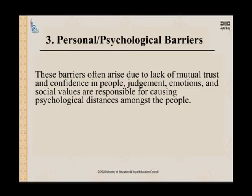The next barrier is the personal or psychological barrier. This involves your emotions and the ability to control them. The barrier often arises due to lack of mutual trust and confidence. Judgment, emotions, and social values are responsible for creating psychological distance among people. When communicating, there should be no lack of mutual trust between sender and receiver, and your emotions shouldn't overpower your communication. If your emotions win over your control, it leads to a personal or psychological barrier.